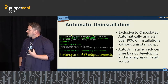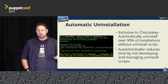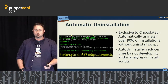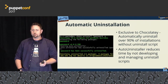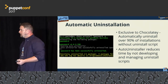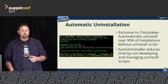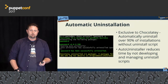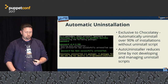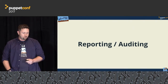Auto-uninstallation: when you're installing packages that install software into programs and features — we call those installer packages — nine times out of ten when you install one of those, you don't need an uninstall script to remove it. Chocolatey already knows how. That's called the auto-uninstaller.